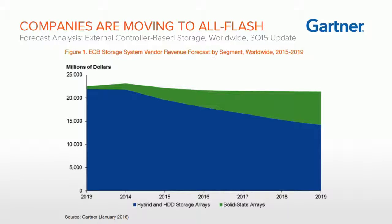What this Gartner chart shows is the speed with which all-flash storage is encroaching on all external storage. By approximately 2019, solid-state arrays and flash-based storage are projected to capture a huge percentage of total storage market share. And critically, the workloads that people are most worried about putting on shared storage are the ones very quickly going to flash.